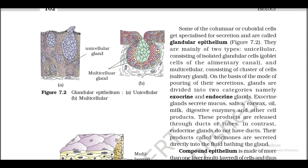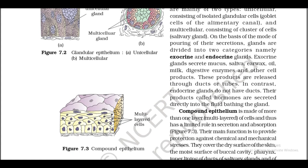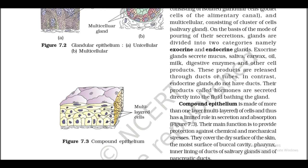Some columnar or cuboidal cells get specialized for secretion and are called glandular epithelium (figure 7.2). They are mainly of two types: unicellular, consisting of isolated glandular cells like goblet cells of the alimentary canal, and multicellular, consisting of a cluster of cells like the salivary gland. On the basis of mode of pouring of secretion, glands are divided into exocrine and endocrine glands. Exocrine glands secrete mucus, saliva, earwax, oil, milk, digestive enzymes, and other cell products released through ducts or tubes.